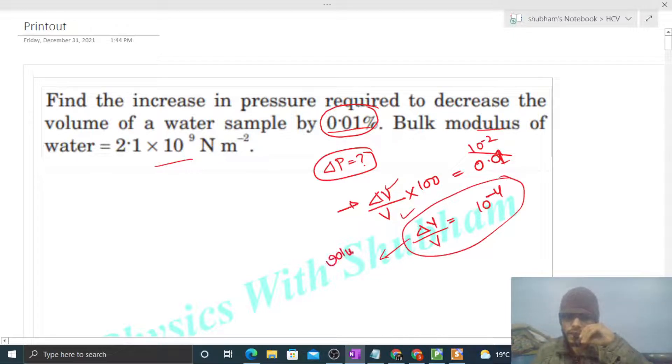This is nothing but volume strain. Bulk modulus is nothing but change in pressure divided by volume strain, that is delta V by V. So you can find out the value of change in pressure.